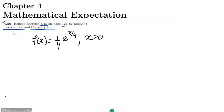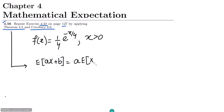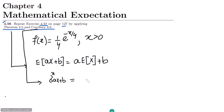Now, in order to see what theorem 4.5 states: to find the expected value of aX + b, it would be a·E[X] + b. Similarly, according to the corollary, the variance of aX + b is equal to a²·σ²(X).